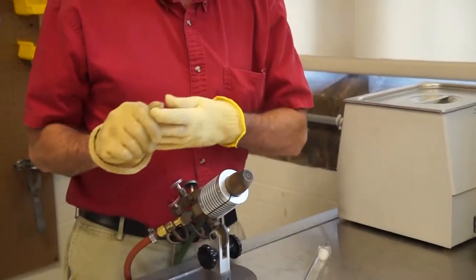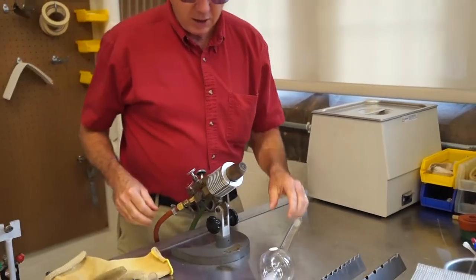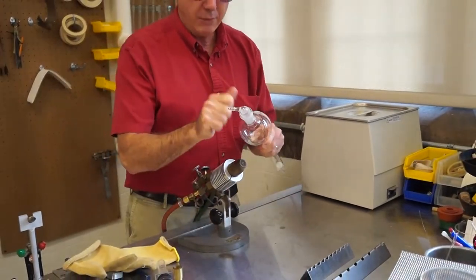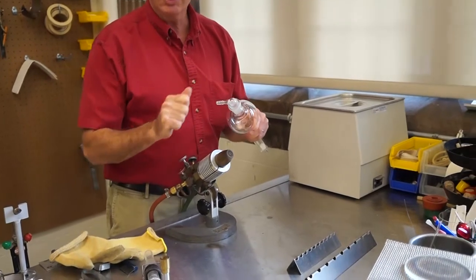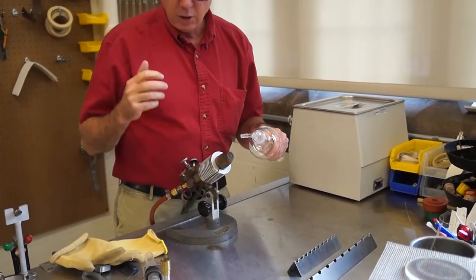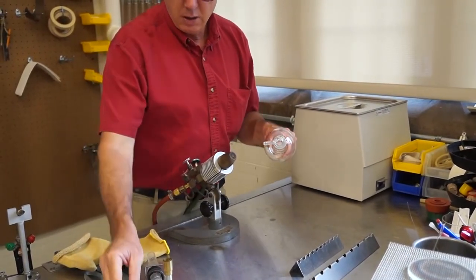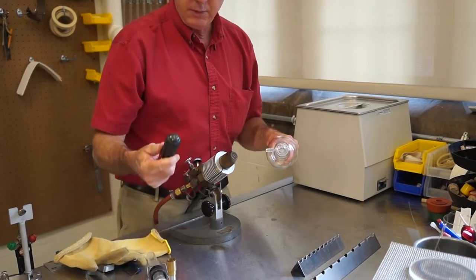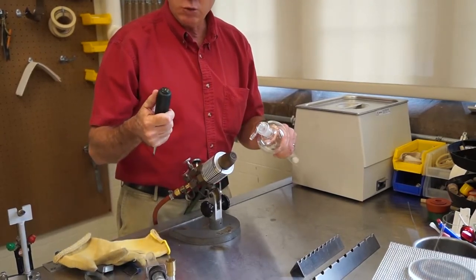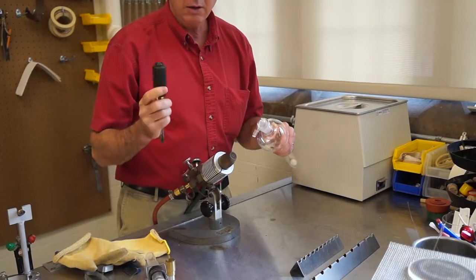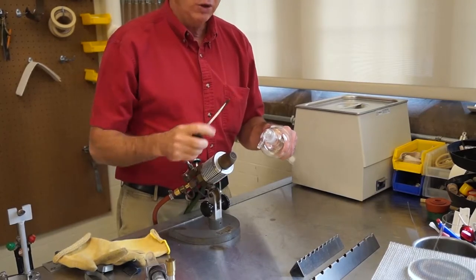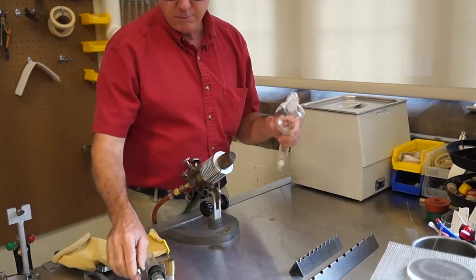If that doesn't work, the next thing you can try is you want to take and you want to be able to wrap this and the vibration kind of jars it loose. You want to use something rigid. Here's a handle of a screwdriver, but it's rubber and that's not good enough. You certainly don't want to use any metal against it. That's a little too hard.